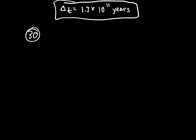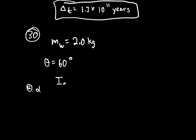Problem 30: To develop muscle tone, a woman lifts a 2-kilogram weight held in her hand. She uses her bicep muscle to flex the lower arm through an angle of 60 degrees. Part A: what is the angular acceleration if the weight is 24 centimeters from the elbow joint? Her forearm has a moment of inertia of 0.250 kilogram-meters squared, and the net force she exerts is 750 newtons at an effective lever arm of 2 centimeters. Part B: how much work does she do?